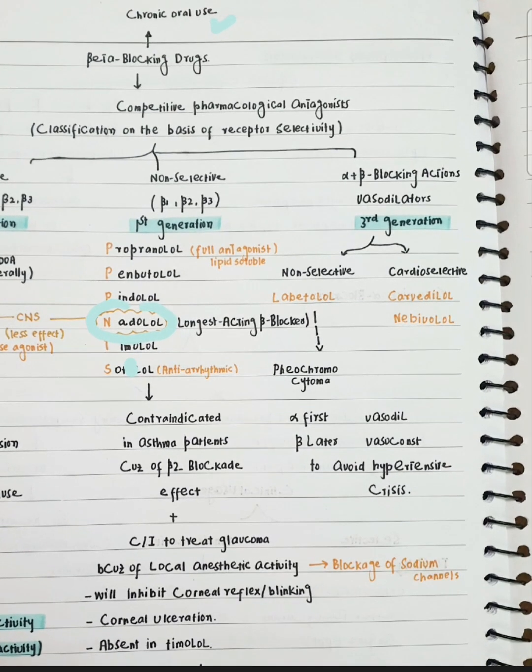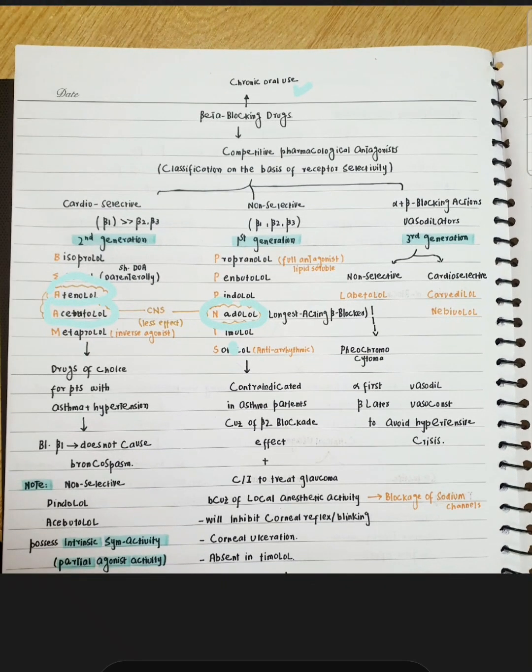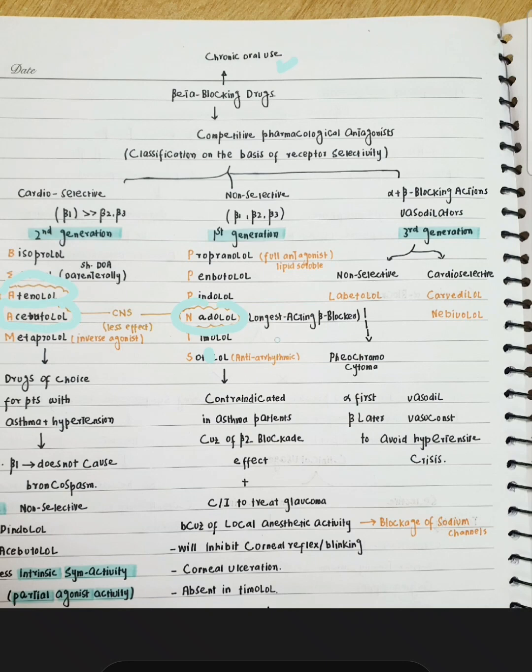Carvedilol and Labetalol are the alpha and beta blocking drugs. You have to memorize the names first, and later once you have memorized them, add the information along with the list. Now, how do we know which drug is the drug of choice for a particular patient? It's very important to look at the drug and the history of the patient, whether he's suffering from asthma or other conditions.